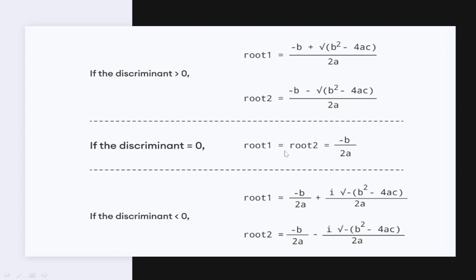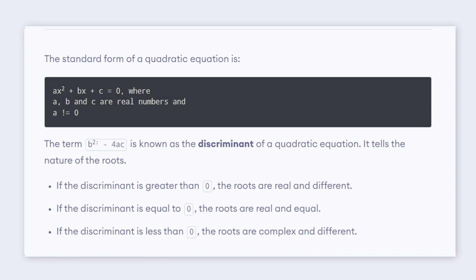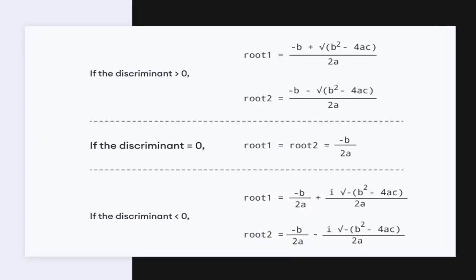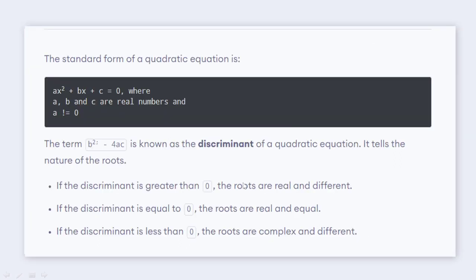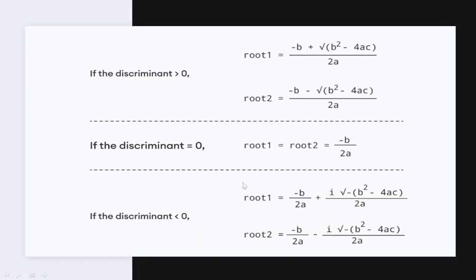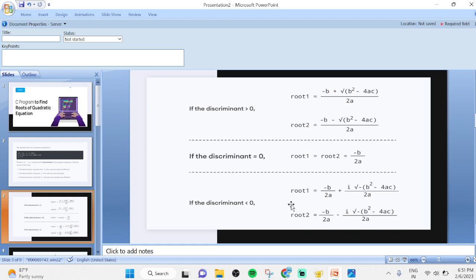If the discriminant is equal to 0, root 1 and root 2 are real and equal, given by minus b divided by 2a. If the discriminant is less than 0, we get two complex and different roots. We are going to implement these formulas using a C program.